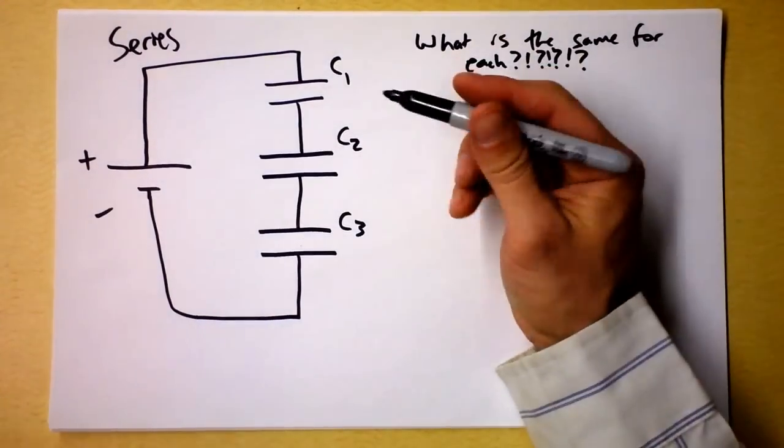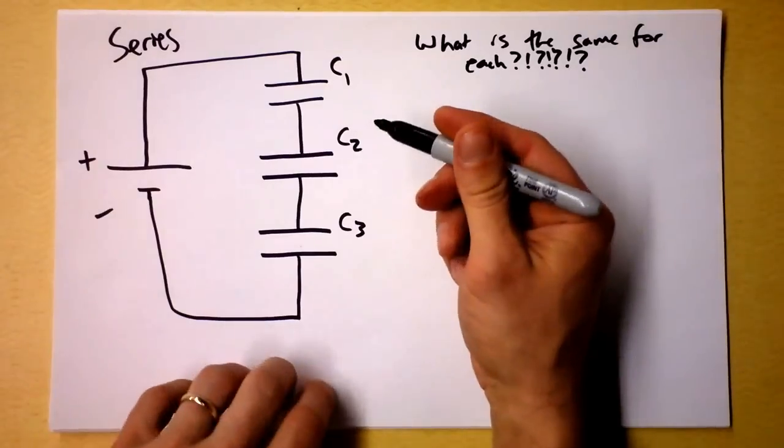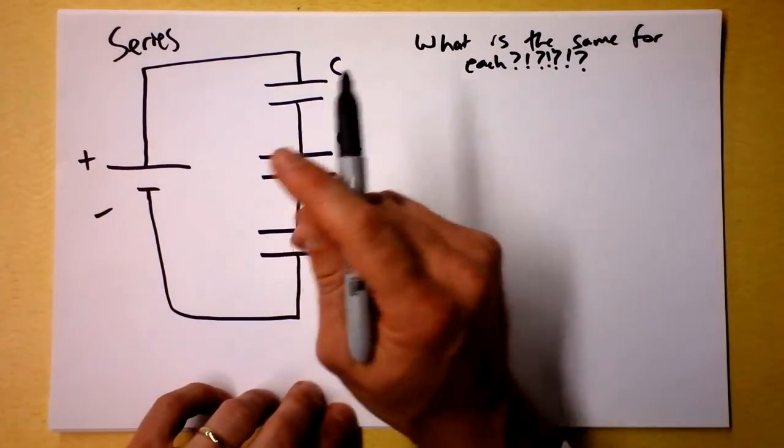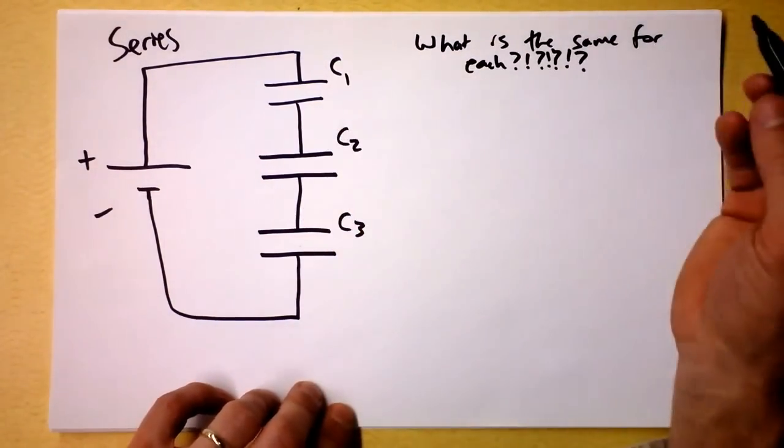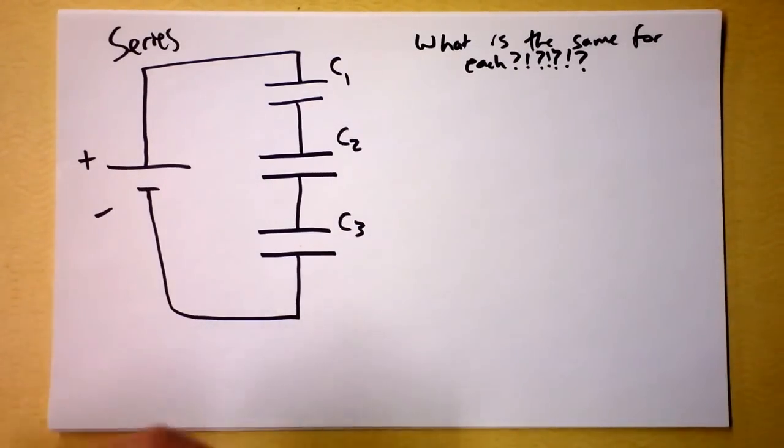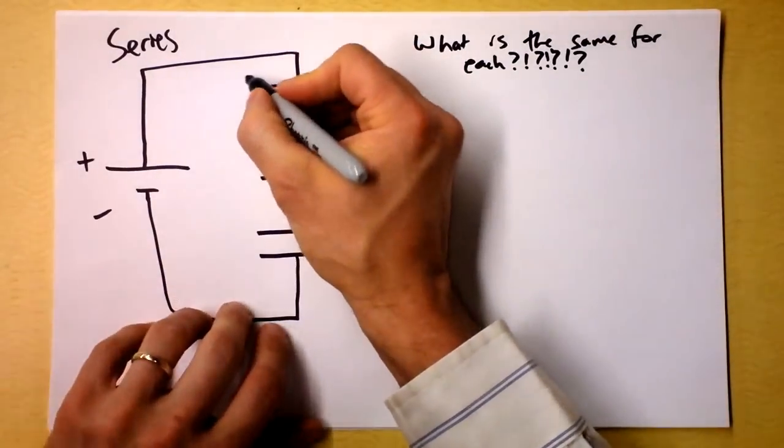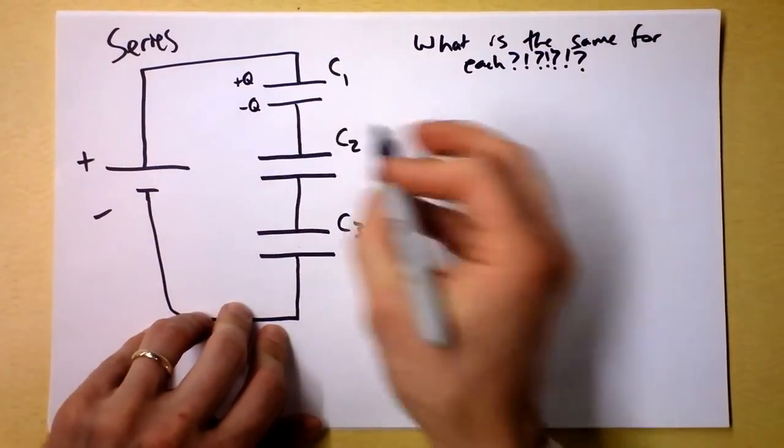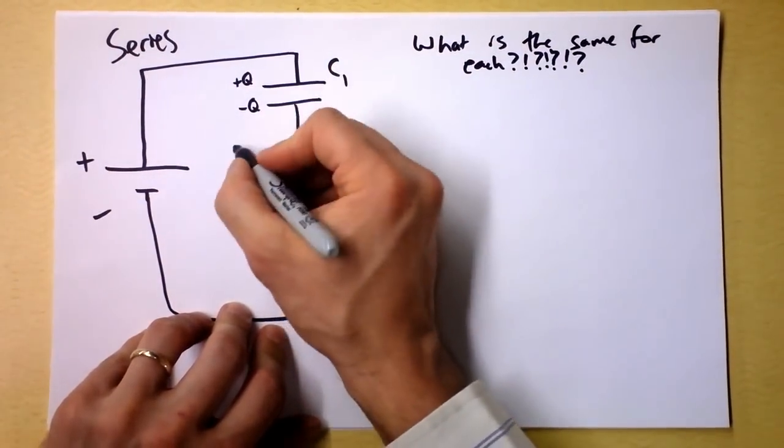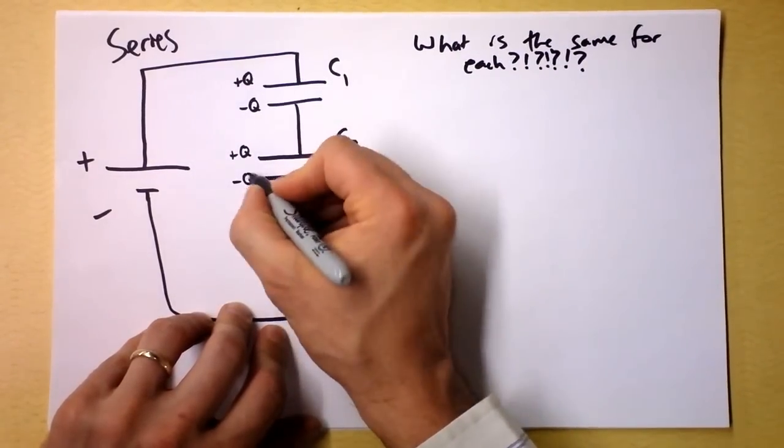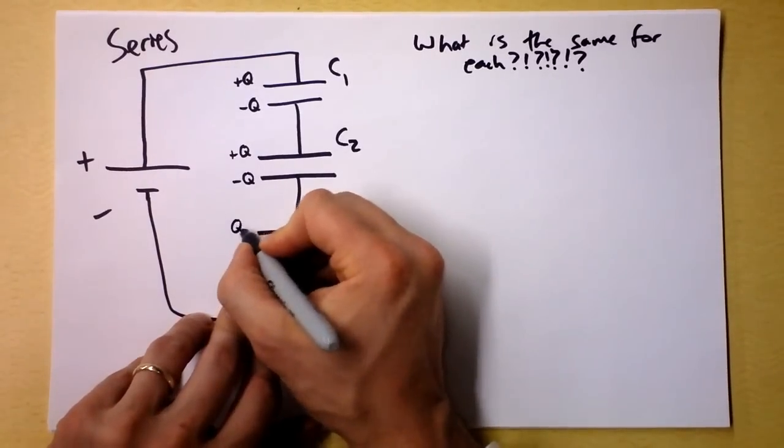What is the same for each of these capacitors? Well, is it voltage? No, I'm not sure it is. Is it capacitance? No, there's no reason that we have to use exactly the same capacitor, but it must be the charge. And I'm going to try to argue why the charge on this capacitor, there's a plus Q here and a minus Q there, has to be the same as the charge on this capacitor, plus Q and minus Q, which again has to be the same charge on this capacitor, plus Q and minus Q there and there.